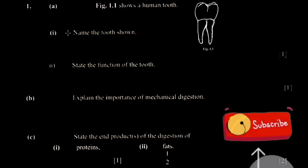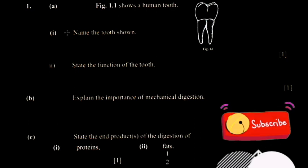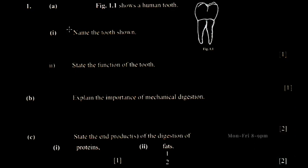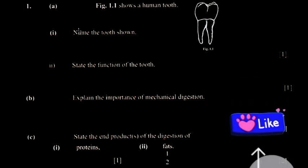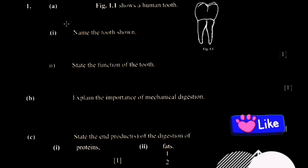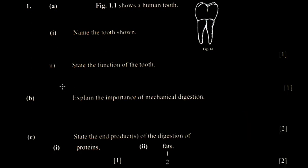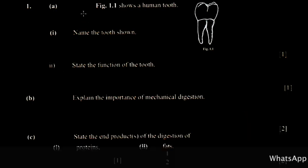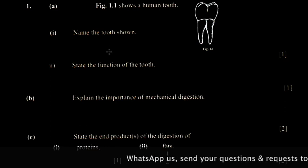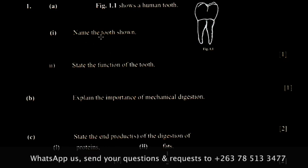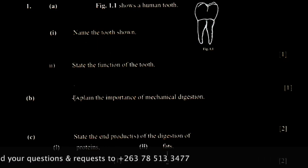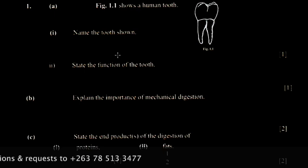Starting on the June 2018 paper, Paper 2 for Combined Science. The way I do it is I actually work through it as if I'm writing the paper, then I explain to you afterwards. I'll play some music and then wait through it and then explain to you.